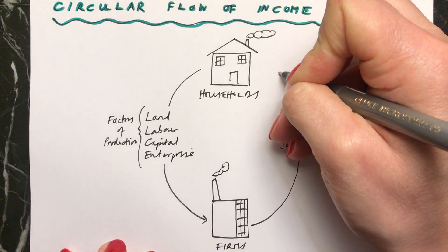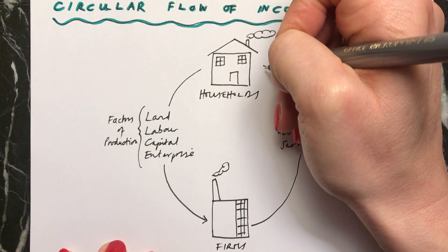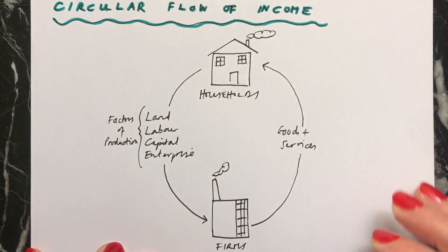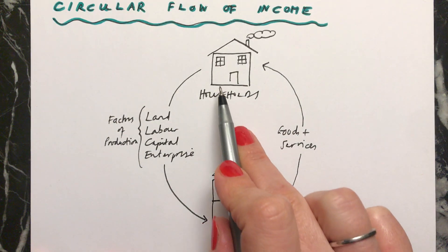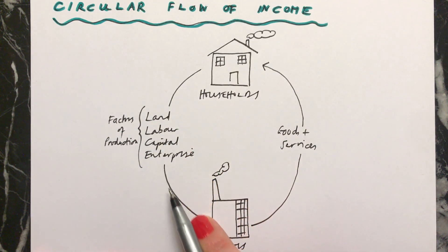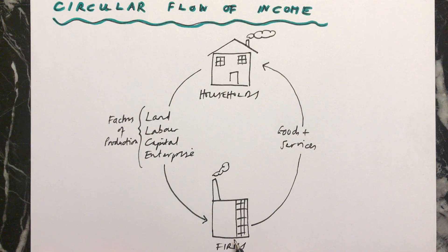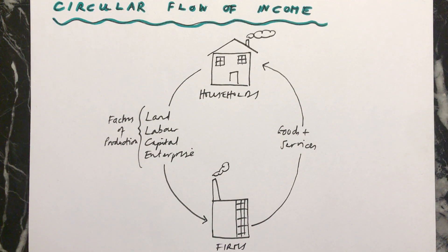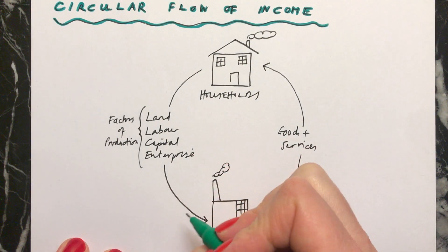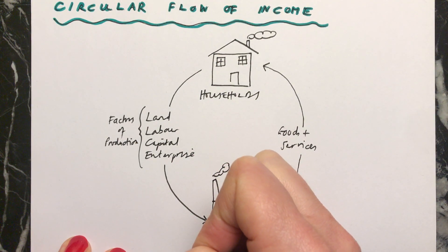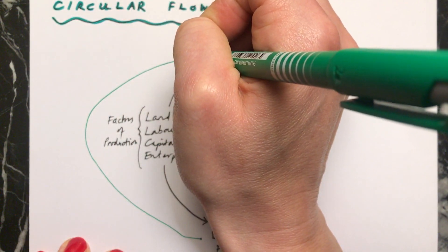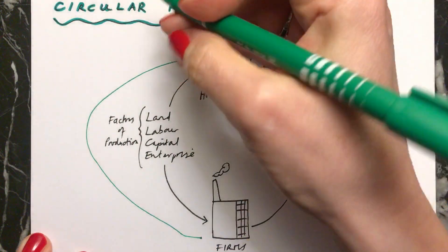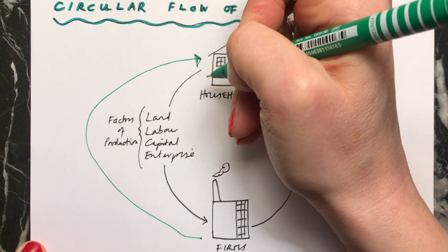So the firms make these goods and services, and we assume all of them are then bought by the people in the households. When the households provide the factors of production to the firms, in return, the firms have to pay them for these factors of production — paying money to the households for the factors of production that they've received.